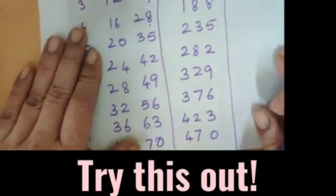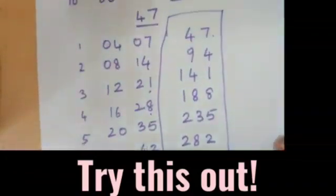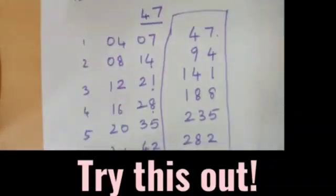So when you have to divide a big number by a two-digit number, it's extremely simple. So write this and keep it, and when you have to do your division, it becomes very easy. So try this out.